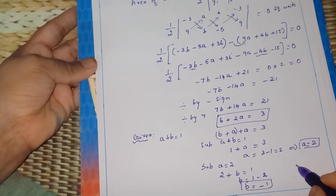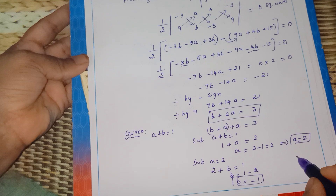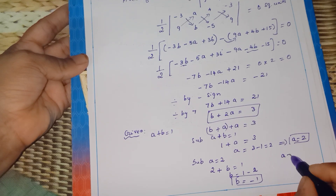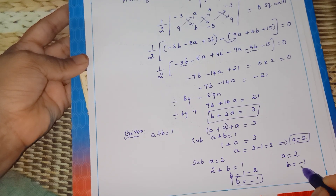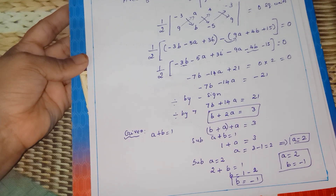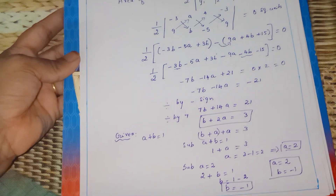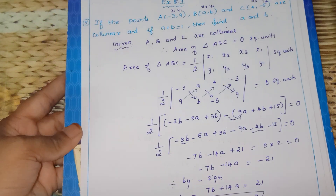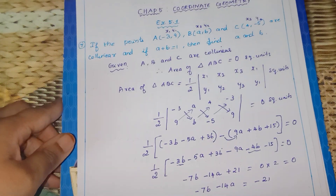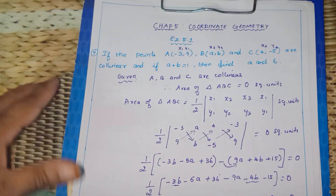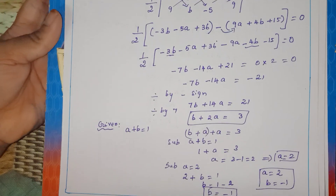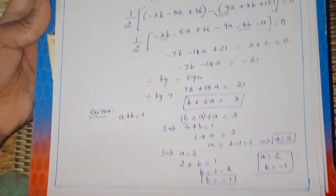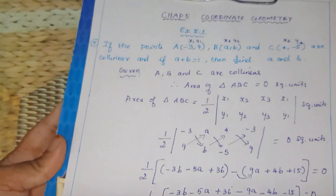So the answer is A = 2 and B = -1. This is a very important question — you can practice it. Thank you, children. Please subscribe to my channel. Thank you.